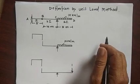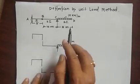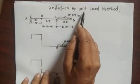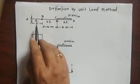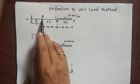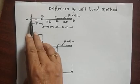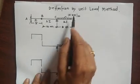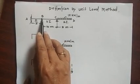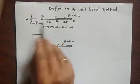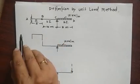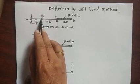Welcome dear students. In this lecture we learn the deflection of a beam by the unit load method. This is a beam ABCD having an internal hinge, subjected to a 10 kN per meter load. Due to this hinge, the structure becomes a determinate structure.